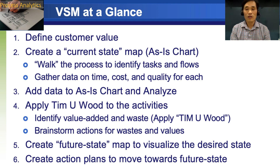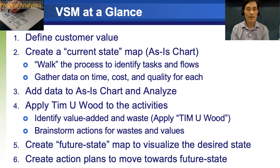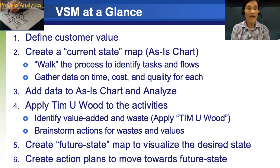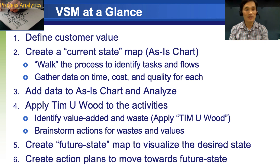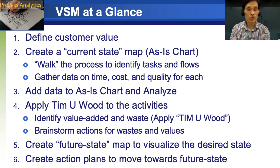How do we draw a value stream map? Here are six steps to take. First, define customer value. Second, create a current state map, which is known as the as-is chart. Third, add data to the as-is chart and analyze. Fourth, apply TIMWOOD to the activities — that will be explained later. Fifth, create a future state map to visualize the desired state. Sixth, create action plans to move toward the future state.